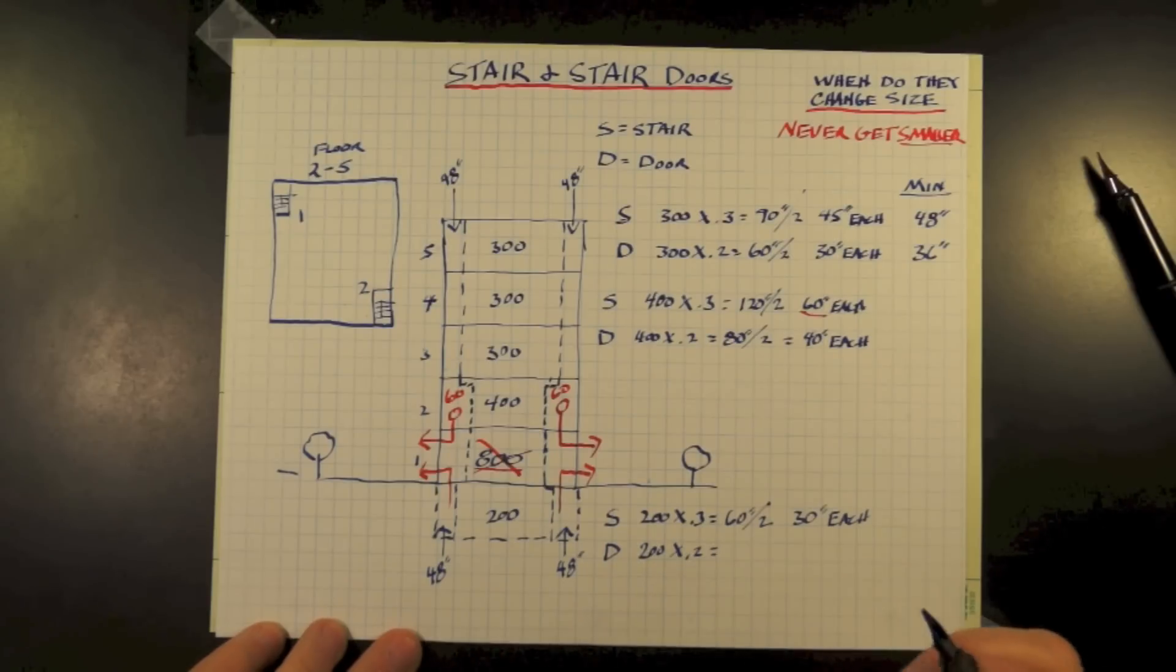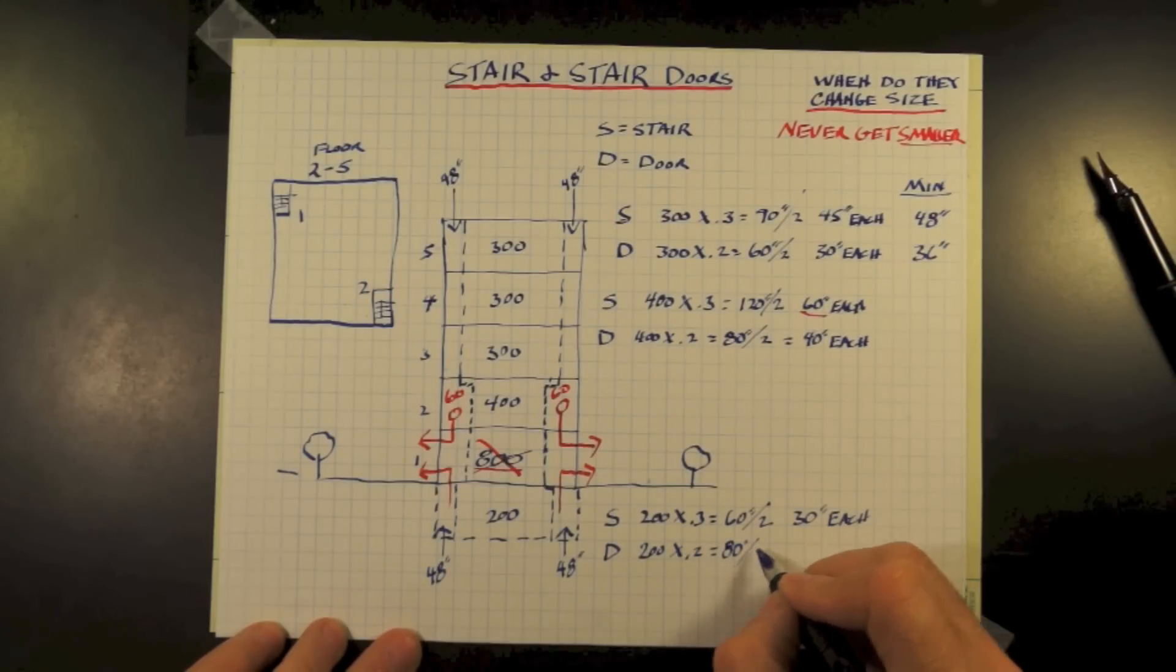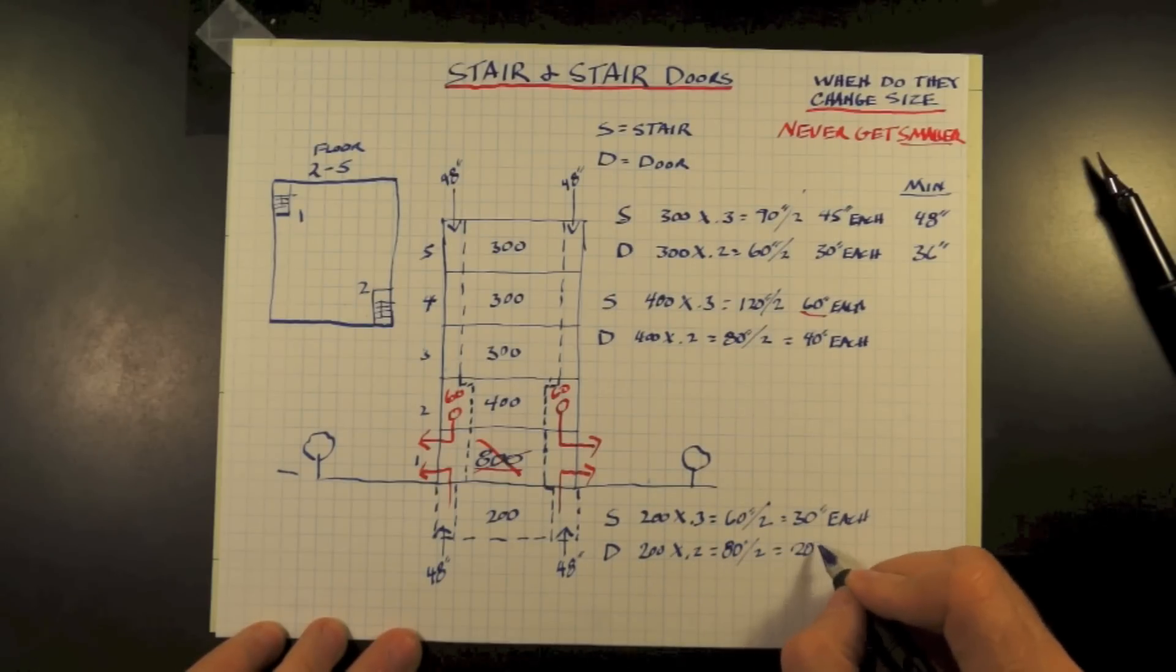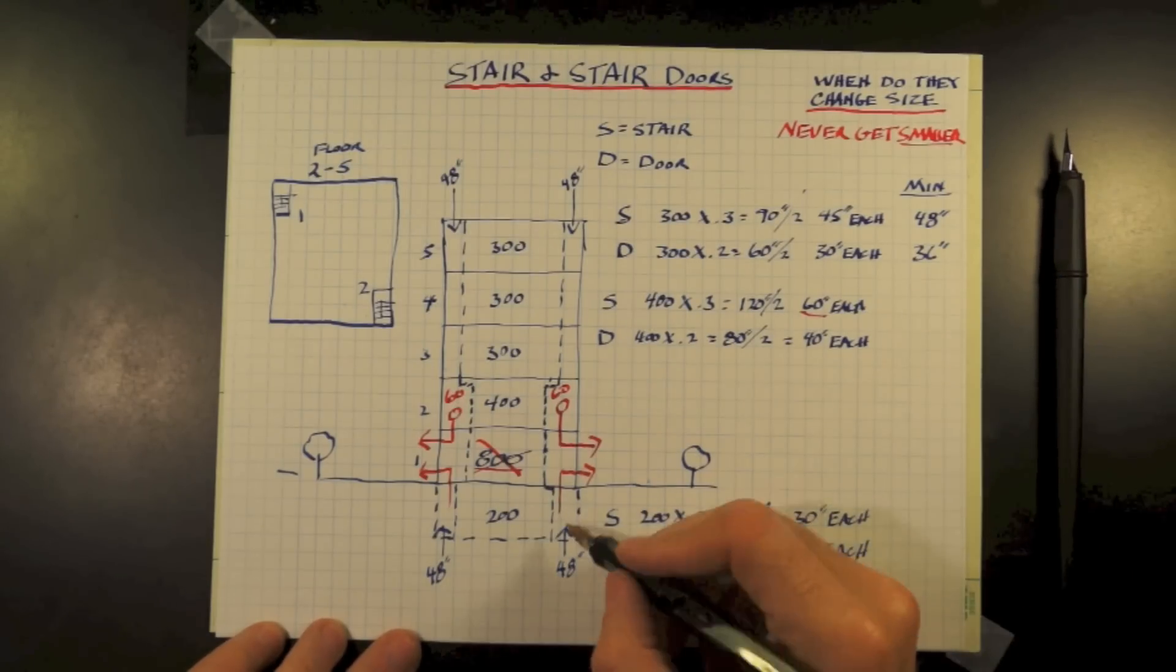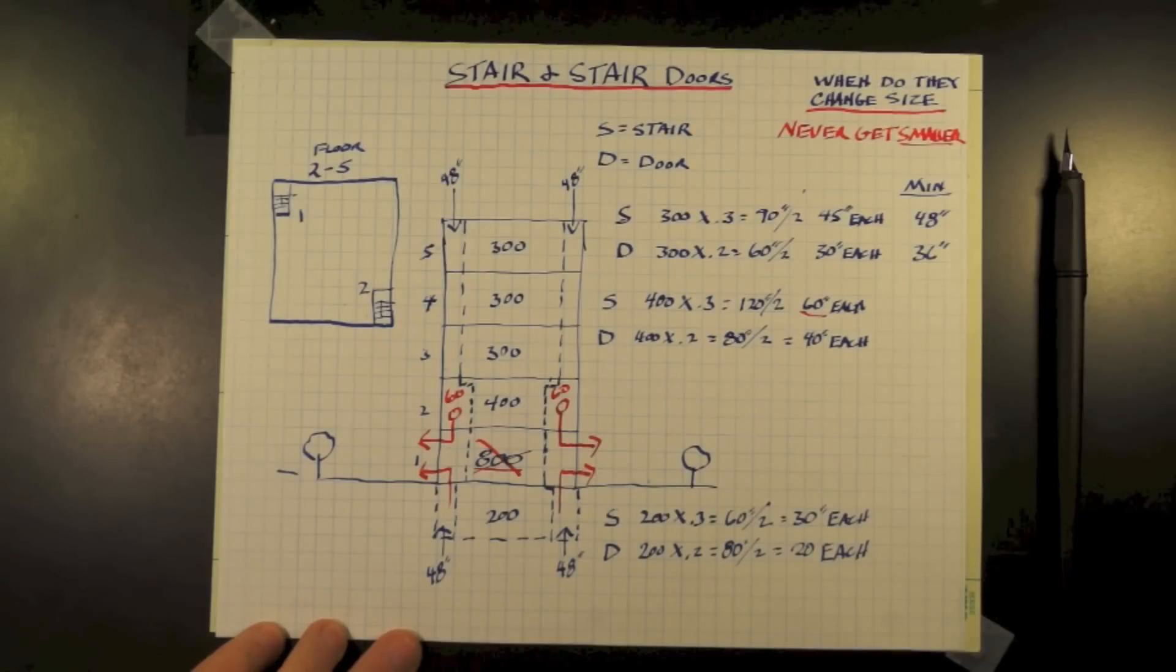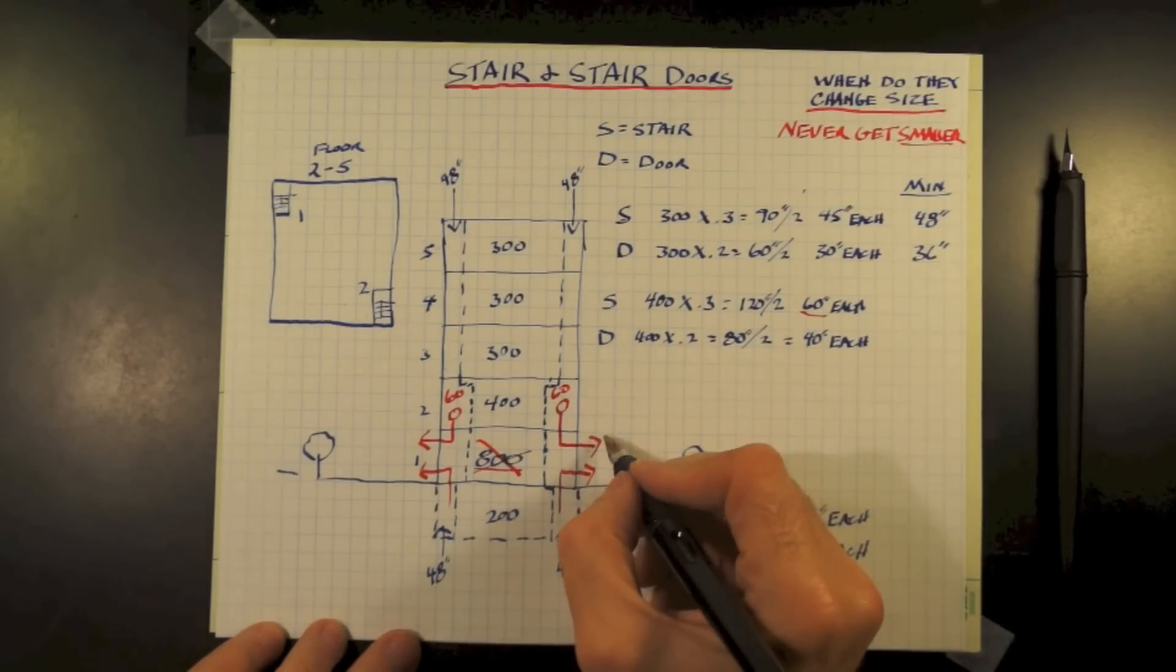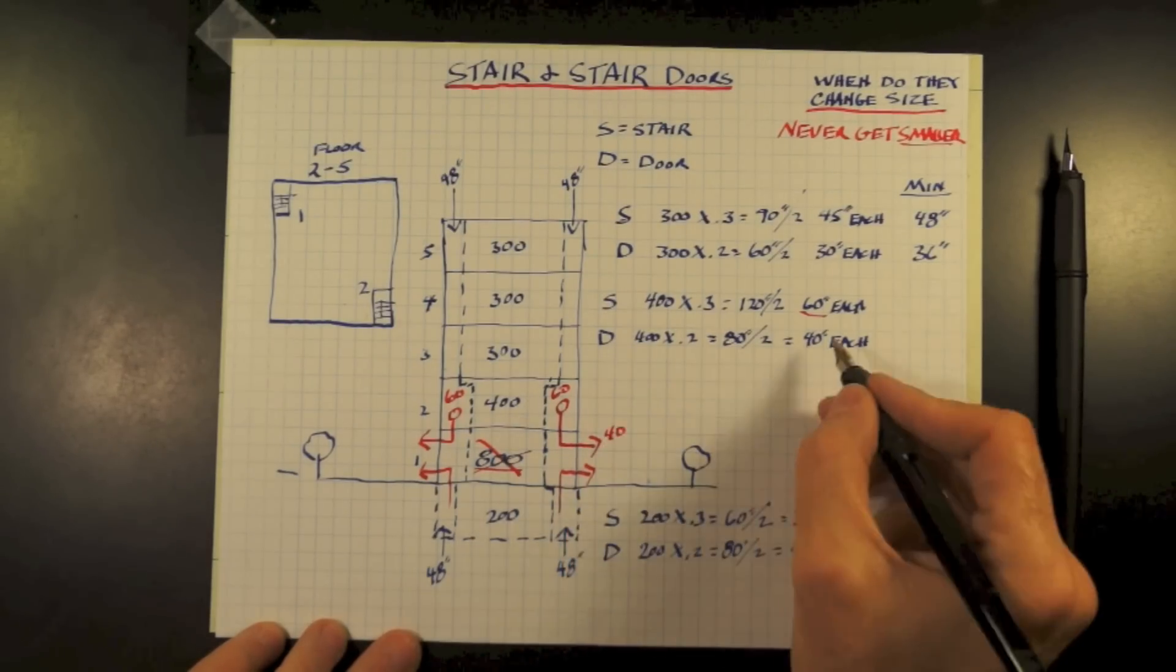Now for our doors: 200 times 0.2 equals a minimum of 80 inches total. Divide by two doors, that equals 20 inches required to exit the people out of the basement. So now these two stairs, one coming from the basement and one coming from above, do need to meet and we need to exit the building.